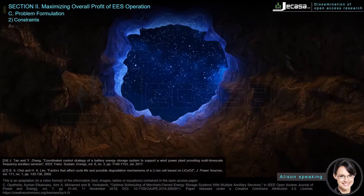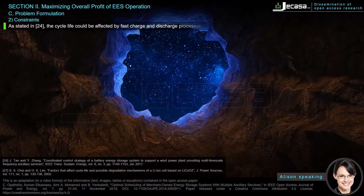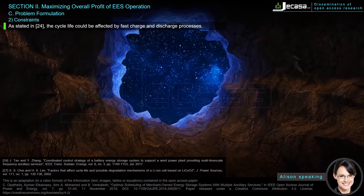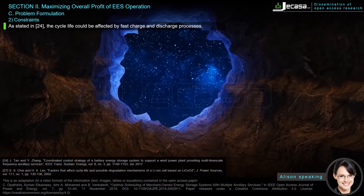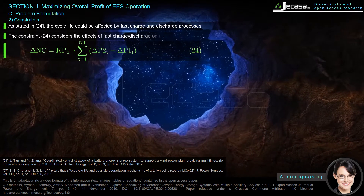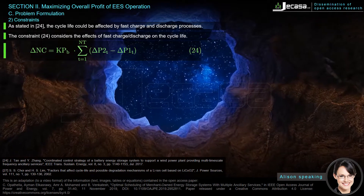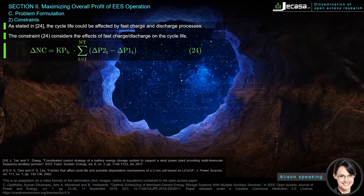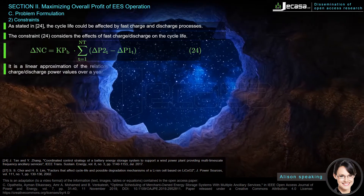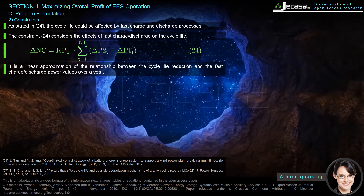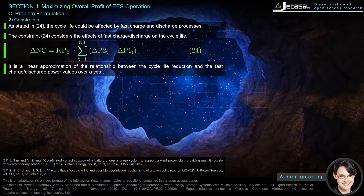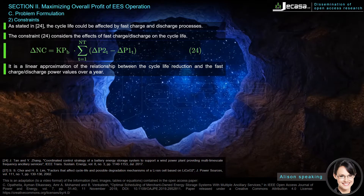As stated in reference 24, the cycle life could be affected by fast charge and discharge processes. Constraint 24 considers the effects of fast charge/discharge on the cycle life. It is a linear approximation of the relationship between the cycle life reduction and the fast charge/discharge power values over a year.